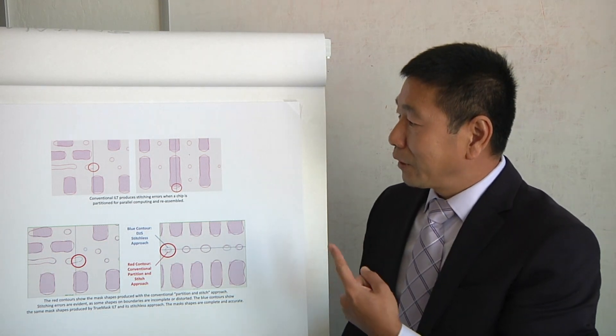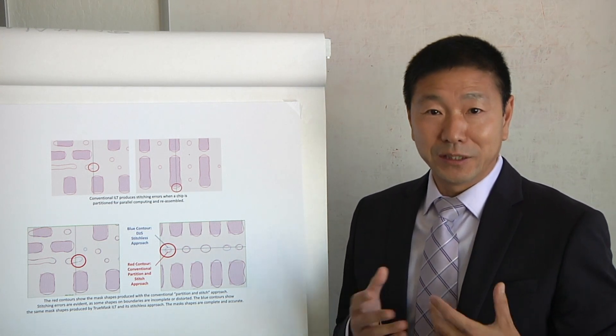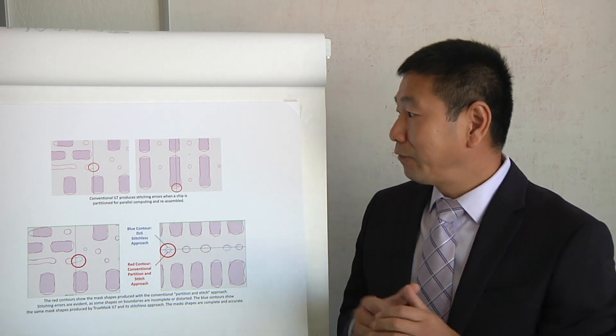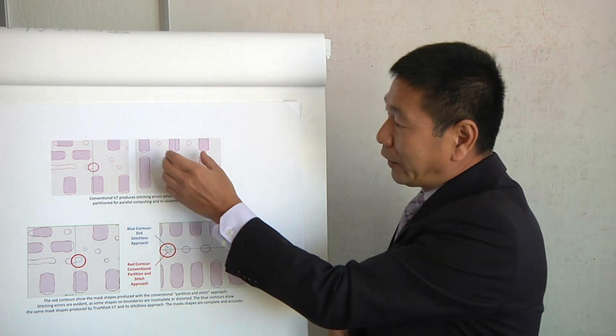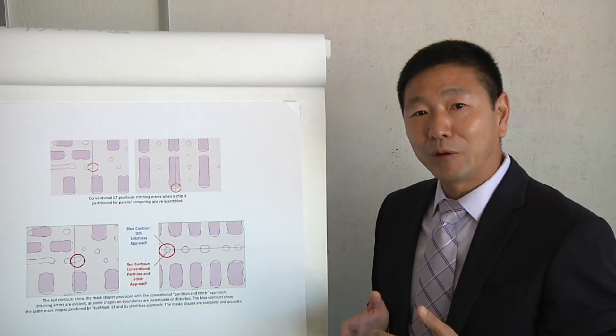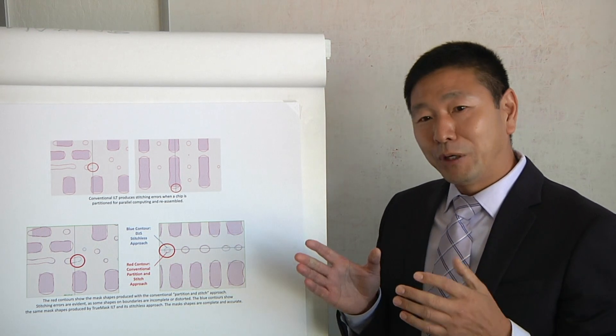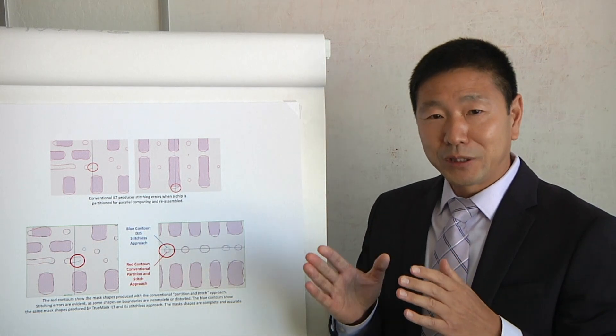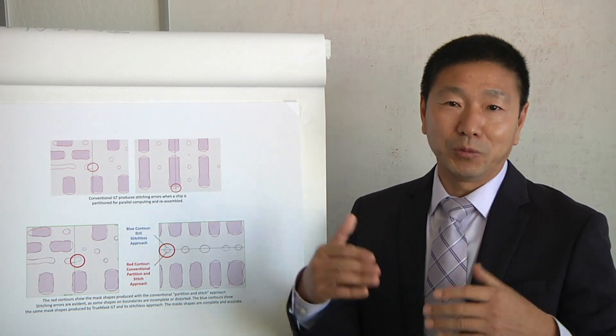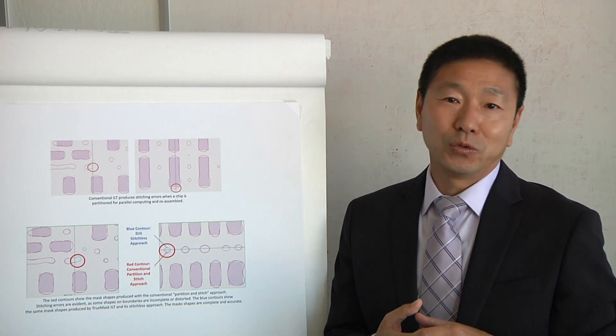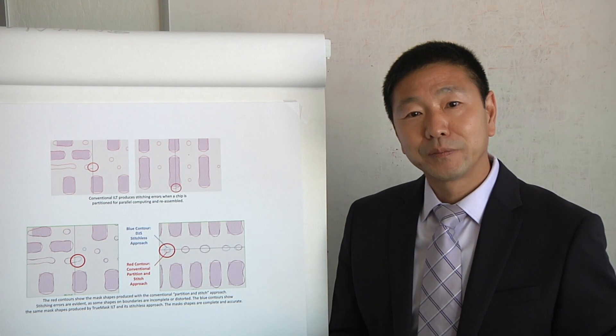Yeah. So first, here, we are trying to target this new type of mask writer because now the multi-beam mask writer is available. So they can actually write those curvilinear patterns so that we don't have to do the Manhattan-lyzation anymore. Secondly, we actually have a different approach to solve the universe problem. And later on, I can show you some of the results. You can see the, like, in terms of symmetry, it looks actually really good. And also, we already integrated those mask rules into ILT. So you've got a common solution that satisfies mask rules.